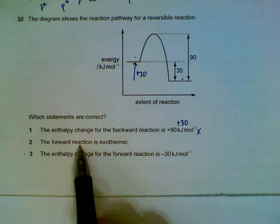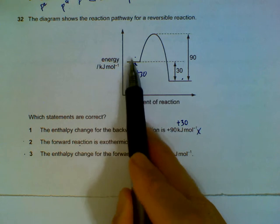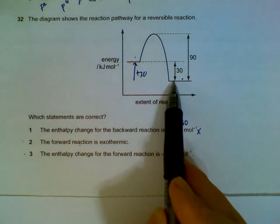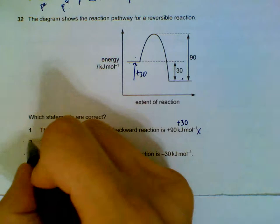Forward reaction is exothermic. Well, you have to lose energy as you go from left to right, so exothermic is correct.